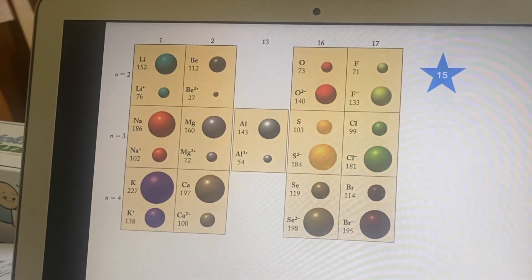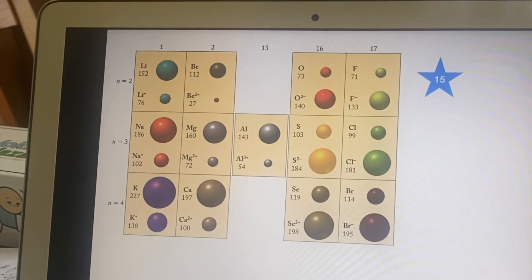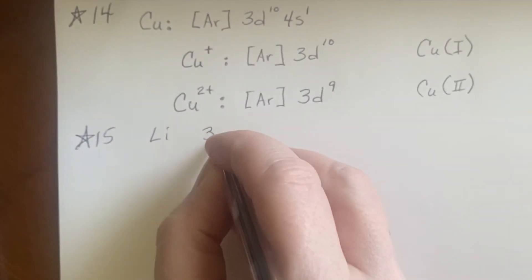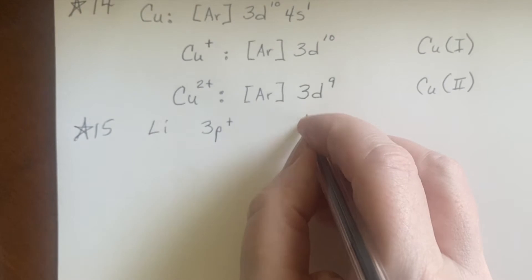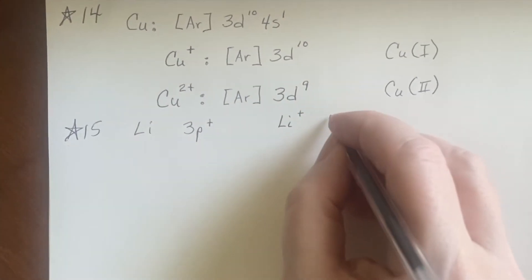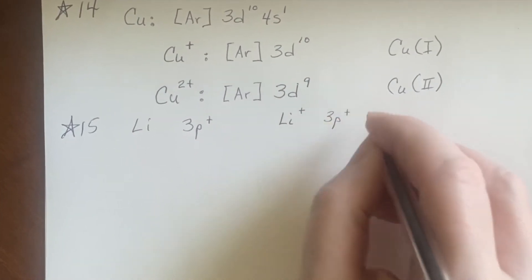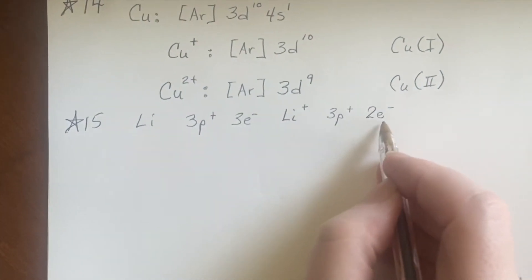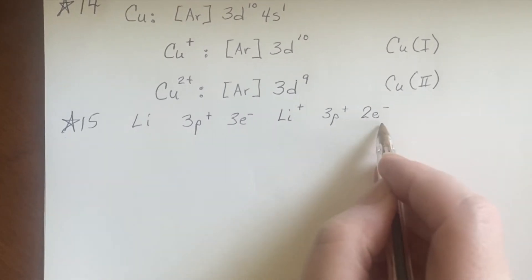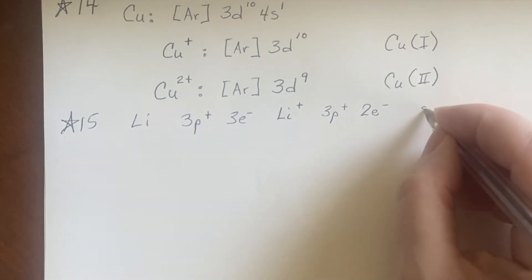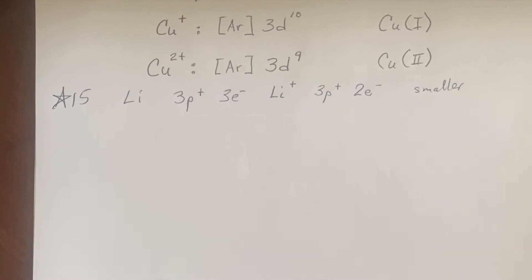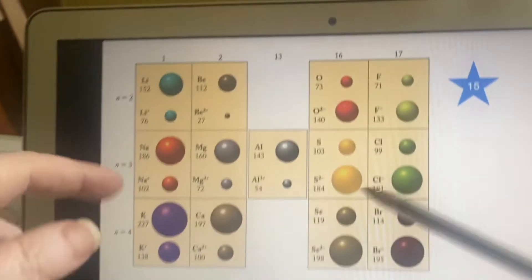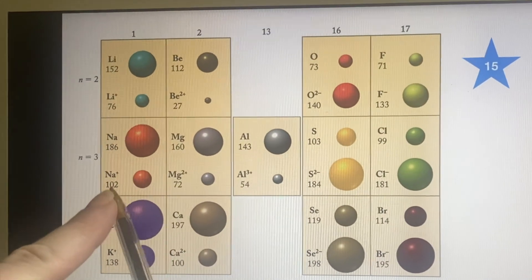You can do some extra analysis because you can go back to that idea of the isoelectronic stuff. For example, the lithium which had three protons—if we're looking at lithium as an ion, now it's got three protons but only two electrons, so we can see that there's fewer that have to be reined in, and we can see that it's going to get smaller.